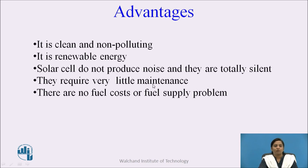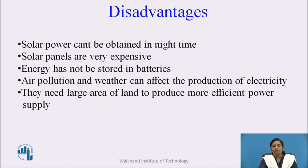Advantages of solar systems: they are clean and non-polluting, they are a renewable energy source, solar cells do not produce noise and are totally silent, they require very little maintenance, and there are no fuel costs or fuel supply problems. Disadvantages: solar power cannot be obtained at night, solar panels are very expensive, energy must be stored in a battery, air pollution and weather can affect electricity production, and they need large areas of land to produce efficient power.